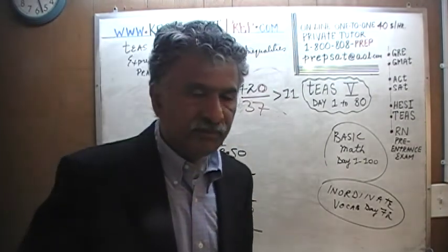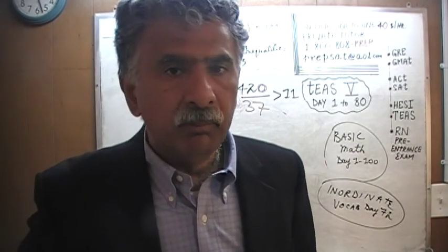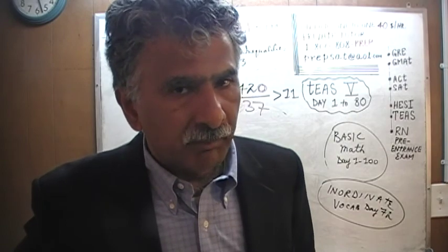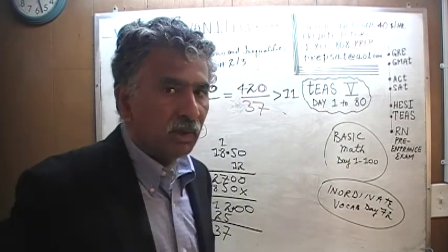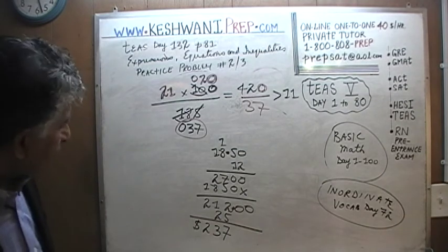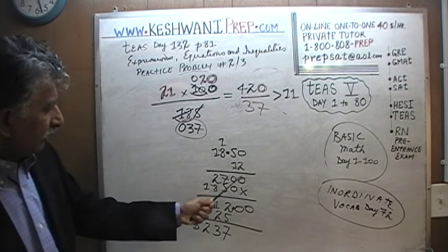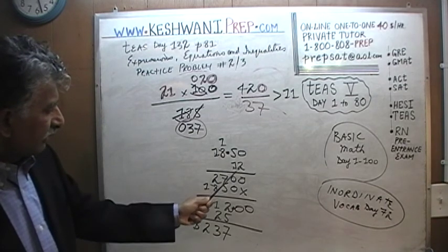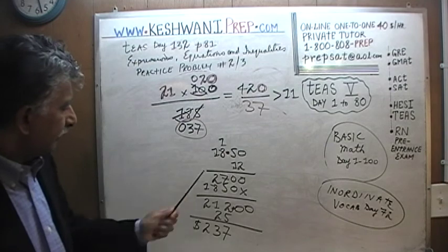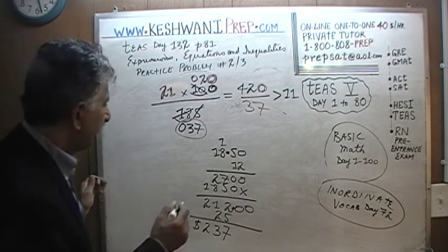We are doing the three practice problems at the bottom of page 81. Today we will do problem number 3. But before I begin problem number 3, I want to fix a mistake that I made yesterday in problem number 2, which was in the multiplication. You will find that 2 times 0 is 0, 2 times 5 is 10 — carry 1. And 2 times 8 plus 1 is 17 — carry 1. This is where the mistake happened.